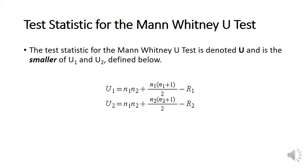The test statistic for the Mann-Whitney U test is denoted by U and is the smaller of U1 and U2 defined below. We have U1 equals N1 times N2 plus N1 times (N1 plus 1) divided by 2 minus R1.